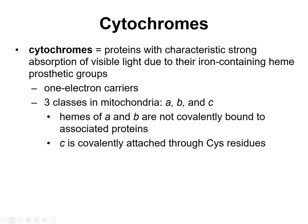The next type is cytochromes — proteins with characteristic strong absorption of visible light because they have an iron-containing heme group. Cytochromes carry one electron, and there are three different classes in mitochondria: A, B, and C. The heme groups of A and B are not covalently bound, so they can leave and come back. However, cytochrome C has its heme group covalently attached through cysteine residues — that's the main difference. Cytochrome C will appear again toward the end of the chapter, where it actually moonlights and has another function.